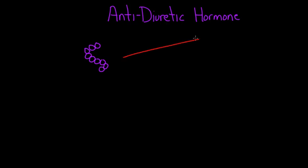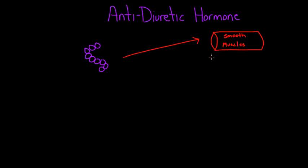At the end of the day, ADH really wants to increase blood pressure. One of the places it visits is all the arterial vessels of the body, and specifically it targets smooth muscle. This hormone is going to cause the smooth muscle to constrict. When smooth muscles constrict, the blood vessels are actually going to tighten down — we call that vasoconstriction. The blood vessels get tight and small, and that's going to increase resistance.